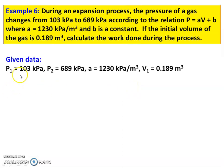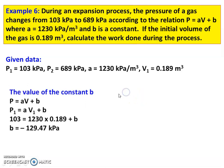Given: P1 equal to 103 kPa, P2 equal to 689 kPa, constant A equal to 1230 kPa per m³, V1 equal to 0.189 m³. The value of constant B we will determine. So pressure P equal to AV plus B. Applying the equation for the initial condition: P1 equal to A into V1 plus B, which gives 103 kPa equal to 1230 into 0.189 plus B. Therefore B equal to minus 129.47 kPa.